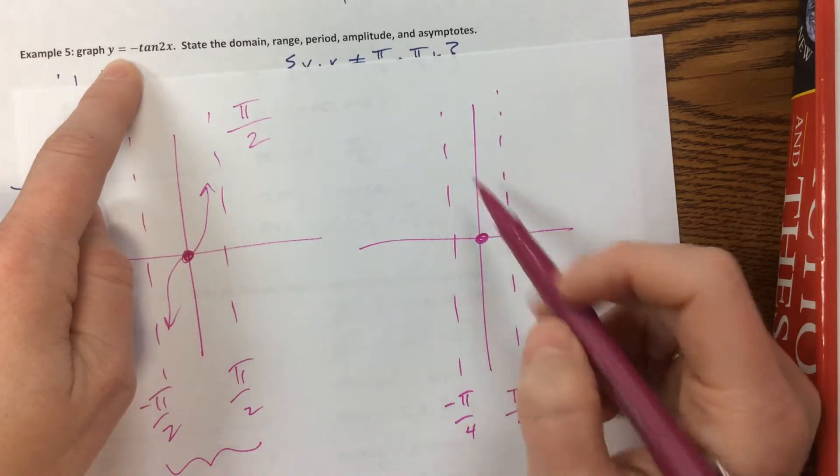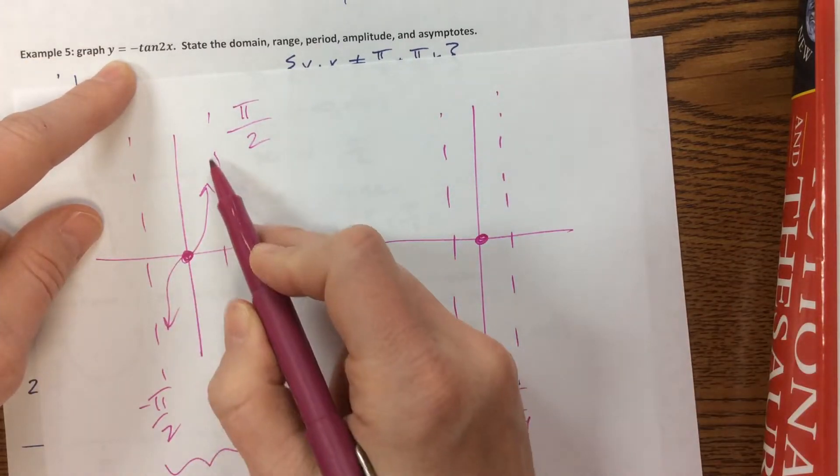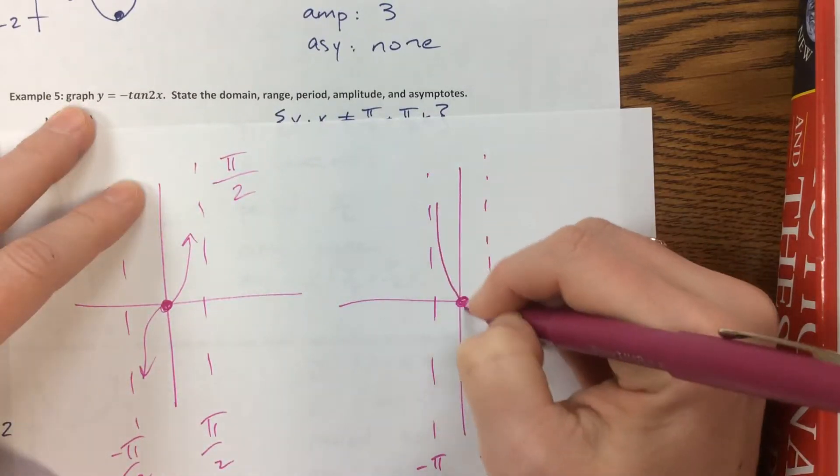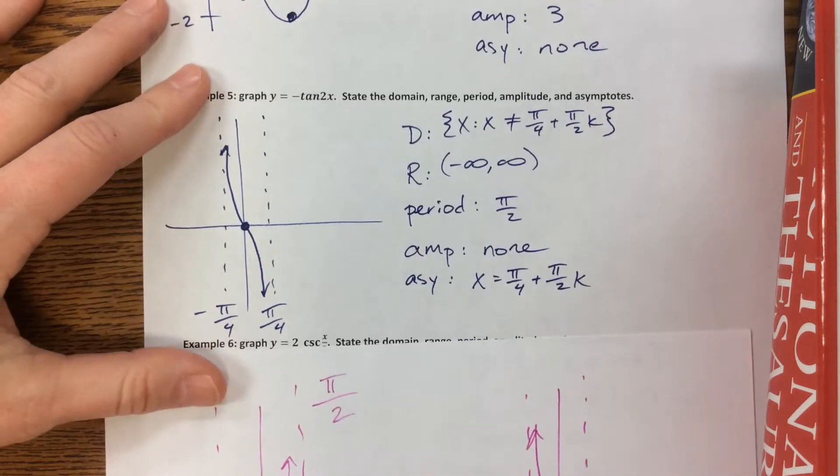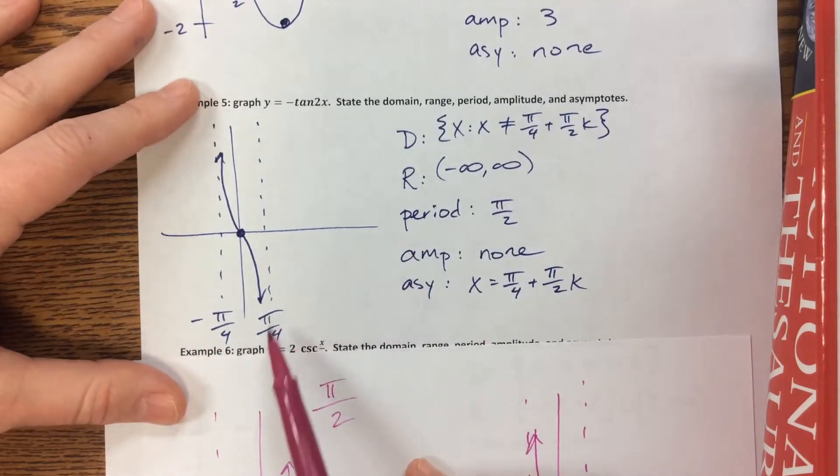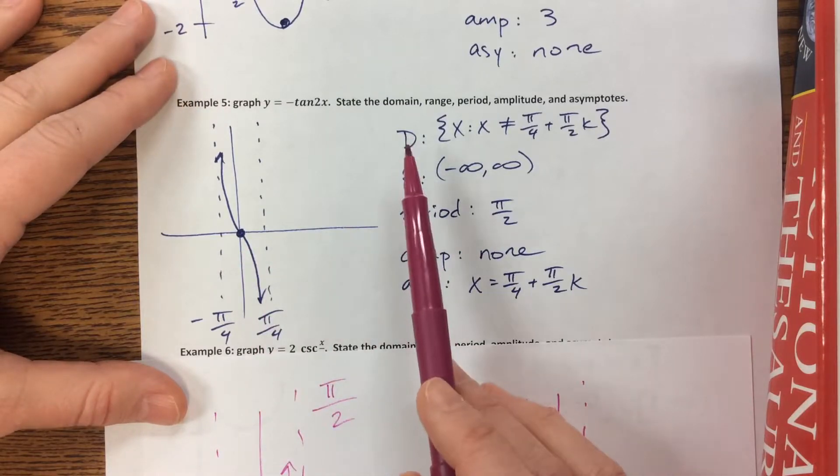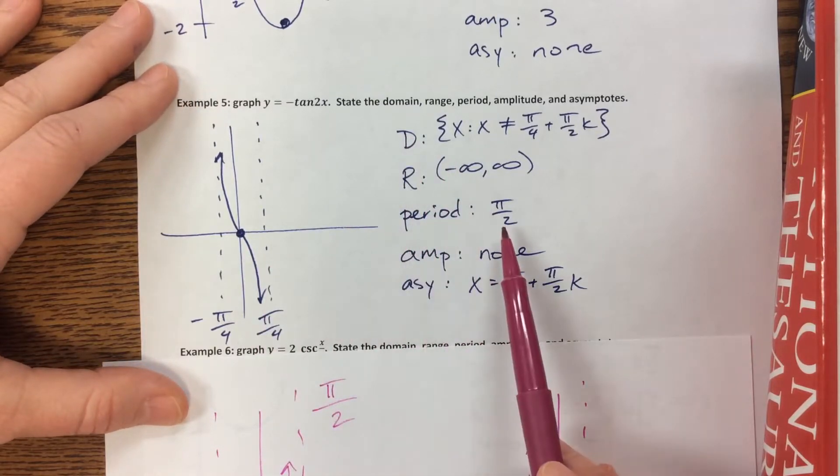The negative out front means that instead of increasing like this, we are now reflected over the x-axis and we're now decreasing. So we're doing something like this. So here's how I put it on my answer key. I should put domain and range at the end of my list because I always do those last.